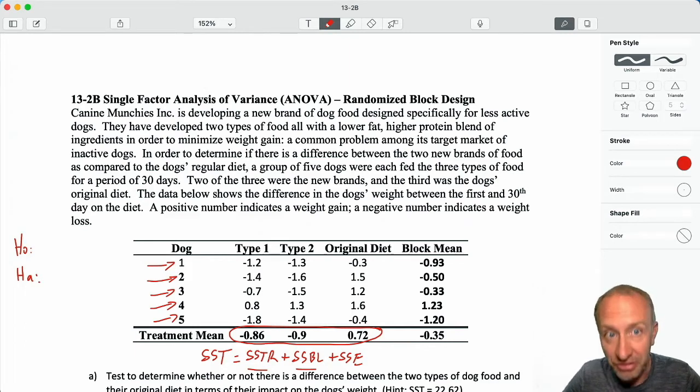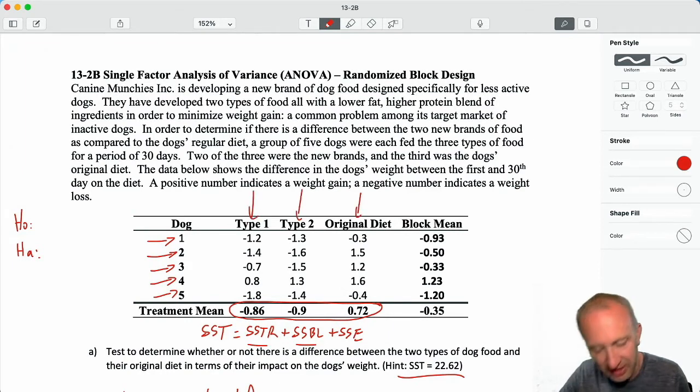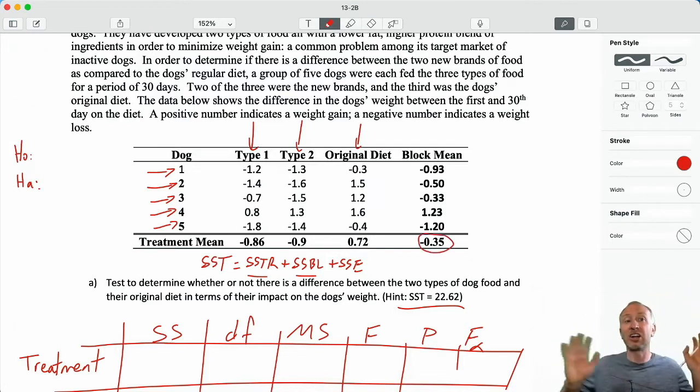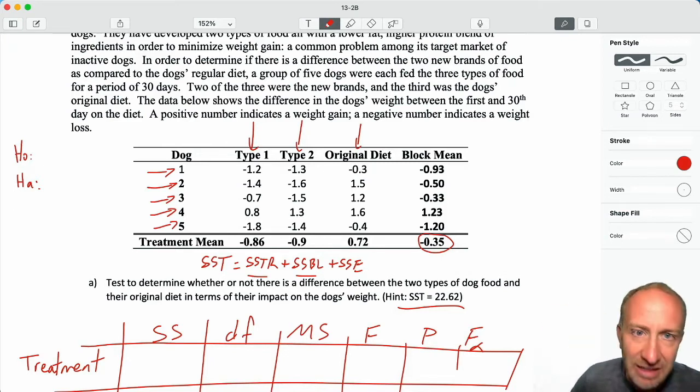In order to determine if there is a difference between the two new brands of food as compared to the dog's regular diet, a group of five dogs were each fed the three types of food over a period of 30 days. Two of the three were the new brands, the third was the original diet. This is the difference in the dog's weight between the first and the 30th day on the diet. Positive number is a weight gain, negative is a weight loss. We have all of our treatment means given, our block means are given, and here's our grand mean.